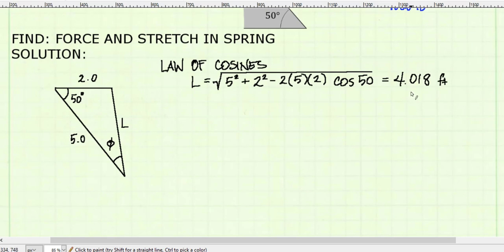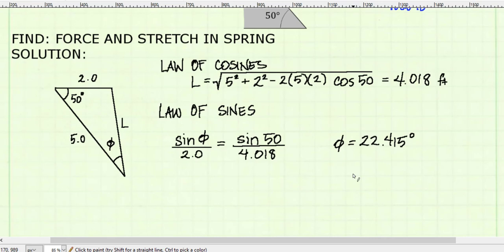Now to find my angle phi, I'll use the law of sines. Using law of sines, I can take the sine of unknown angle phi over its opposite side 2, set it equal to the sine of 50 degrees over its opposite side L, 4.018. Solving for phi, I get 22.415 degrees.